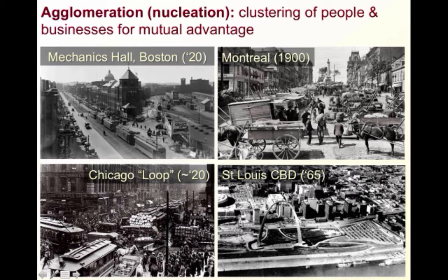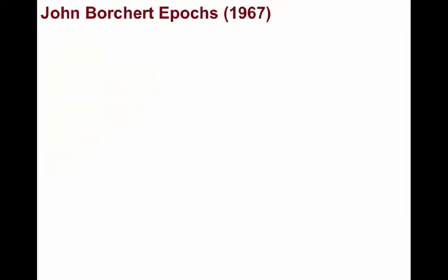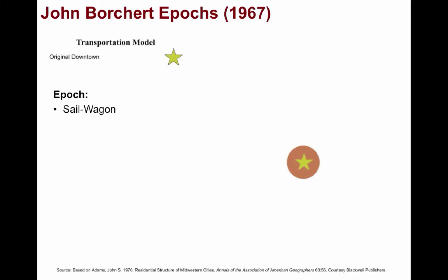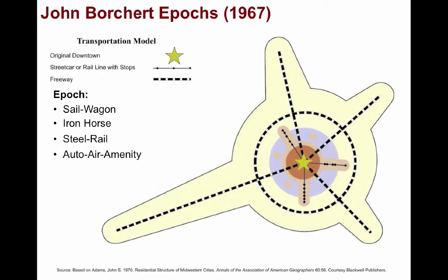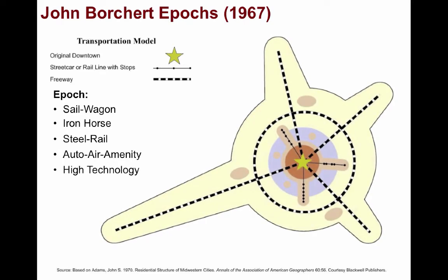You can see some of the early CBDs of cities such as Montreal, Boston, Chicago, and St. Louis. We're primarily going to be looking at the John Borchert model, developed by a University of Minnesota professor back in 1967. He analyzed urbanization in North America and categorized five distinct epochs based on the impact of a particular transport technology, which increased the rates of growth and complexity of the urban landscape over time.